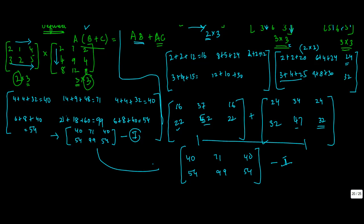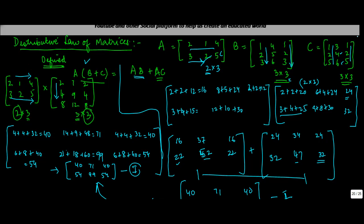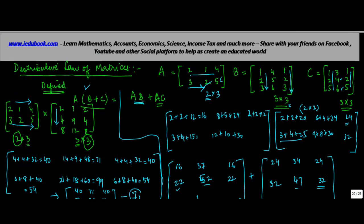Comparing equation 1 and equation 2: both give [40, 71, 40 / 54, 99, 54]. So both are equal. Hence we conclude that A into B plus C is equal to AB plus AC. There was a small error earlier where we had written BC instead of AC — that has been corrected.